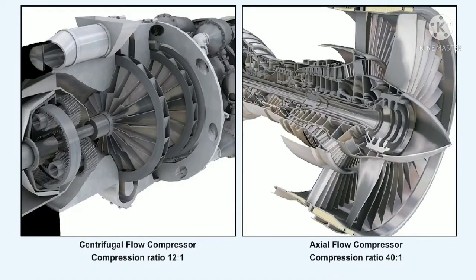Axial flow compressors have several advantages over the centrifugal compressor. For instance, whereas the centrifugal compressor compression ratio is limited to approximately 12 to 1, when the maximum of two stages are used in series, by adding more stages to an axial flow compressor, compression ratios as great as 40 to 1 can be obtained. The term compression ratio refers to the ratio of the pressure at the outlet of a compressor to that at its inlet.